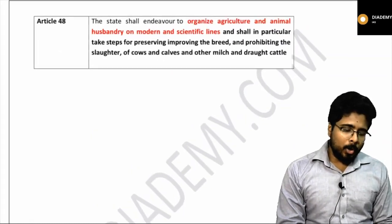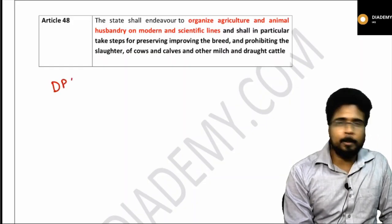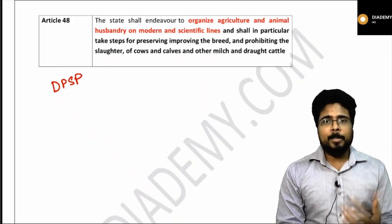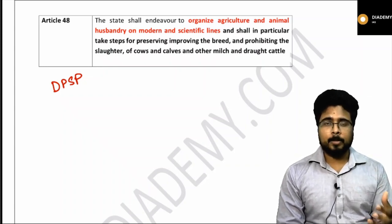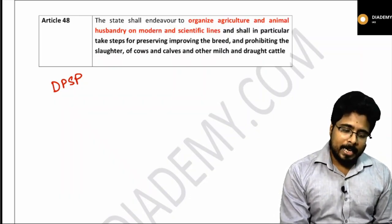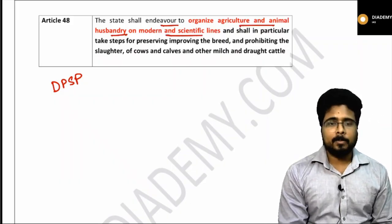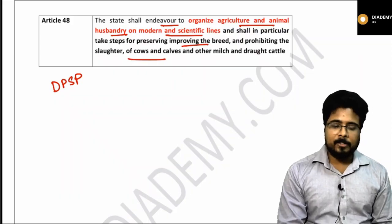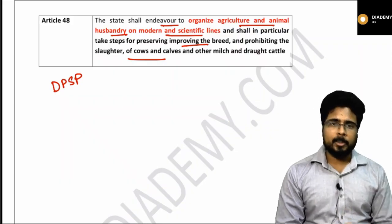Article 48 was in news. Article 48 talks about the DPSP, the Directive Principles of State Policy. The DPSP talks about social and economic justice to the people. In the DPSP, we have the important things like the Gandhian principles, the social principles and the liberal principles. Article 48 specifically talks about the state shall endeavor to organize agriculture and animal husbandry on modern and scientific lines, and shall take steps for preserving and improving the breed, prohibiting slaughter of cows, calves and other milch and drought cattle.